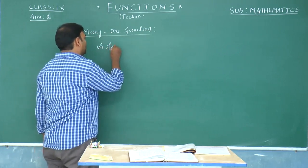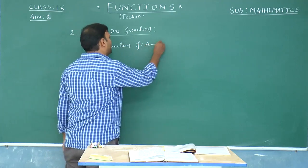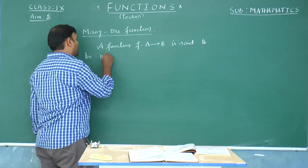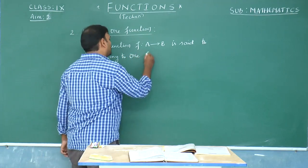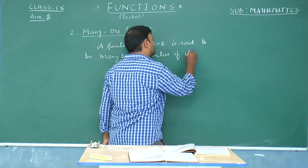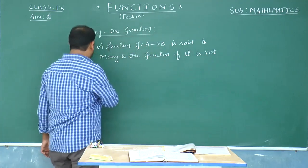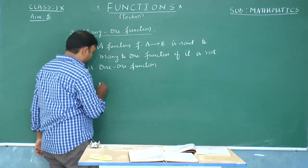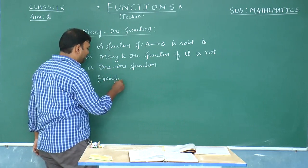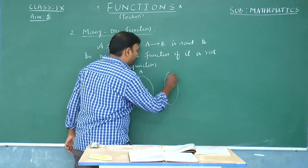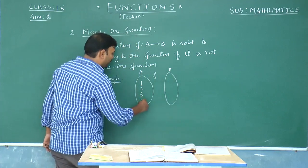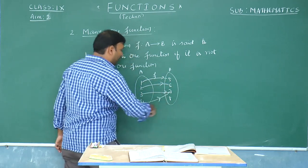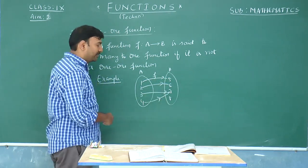A function f mapping A to B is said to be a many-to-one function if it is not a one-to-one function. That means at least two different elements of set A may have the same image. For example, with set A containing 1, 2, 3 and set B containing 4, 5, 6, 7, 8 — if at least two elements of the domain share the same image, we call the function many-to-one.